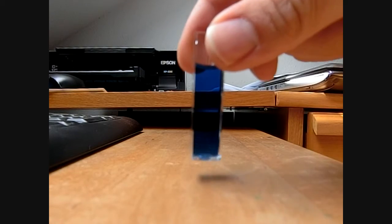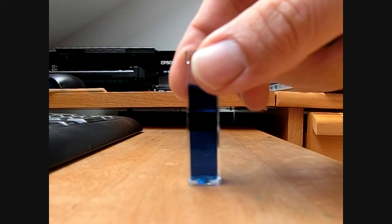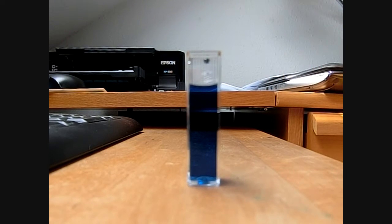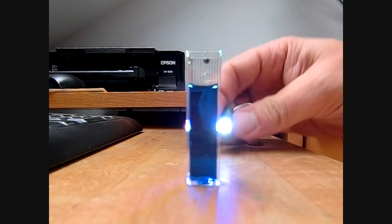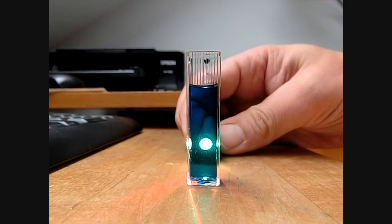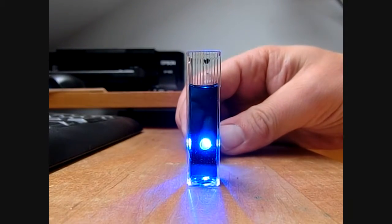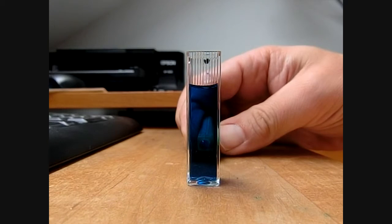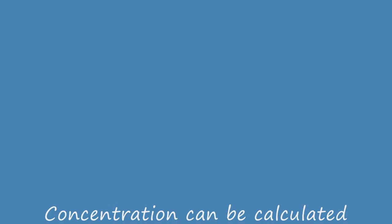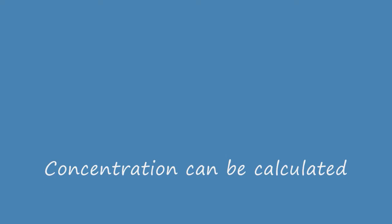However, if we now dilute the solution further, there is more light coming through the solution. One can say that much less of the light is absorbed by the solution. And you may see that there are still some colors that are more easily going through the cuvette than others.